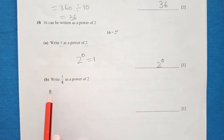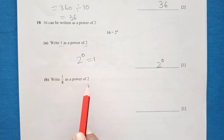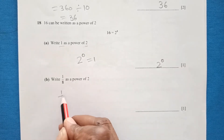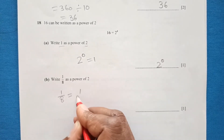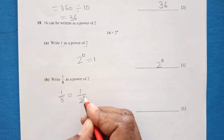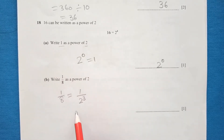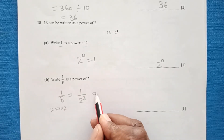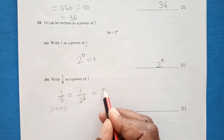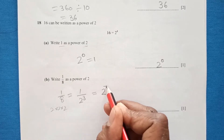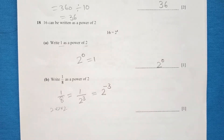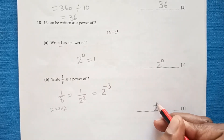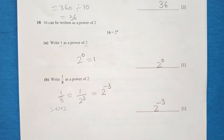Part B: Write 1 over 8 as a power of 2. Let's see: 8 is 2 cubed, since 2 times 2 times 2 gives 8. We can replace 8 by 2 cubed. Since we need a power of 2, bringing 2 cubed to the numerator makes the exponent negative. So the final answer is 2 to the power negative 3.